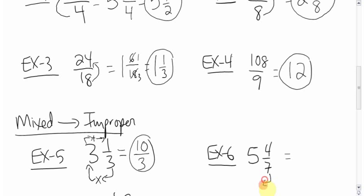Over here, same deal. 7 times 5, bottom times big, plus the top. 7 times 5 is 35, plus 4, 39, and leave the bottom number as 7. You cannot reduce that, you're done.